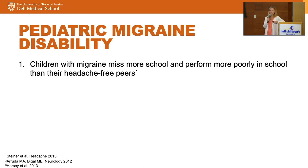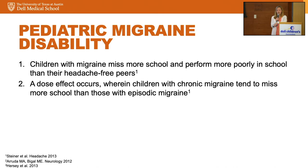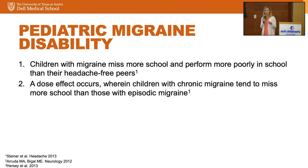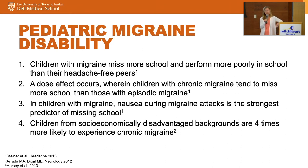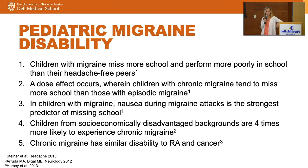When we look at pediatric migraine disability, children with migraine tend to miss more school and perform more poorly than their headache-free peers. There's a dose effect: kids with more frequent or chronic migraine miss more school than those with episodic migraine. Nausea is the highest predictor for missing school, so any patient with nausea as part of their migraine syndrome needs nausea treatment offered. Children from socioeconomically disadvantaged backgrounds are four times more likely to have chronic migraine, and chronic pediatric migraine has similar disability to rheumatoid arthritis and pediatric cancer.